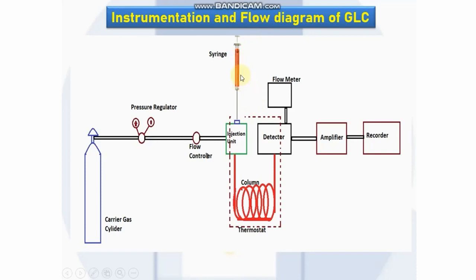Gaseous samples may be introduced by a gas-tight hypodermic needle, while for liquid samples, syringes may be used. The column is the most integral part of the system where the basic chromatographic process takes place. It consists of coiled tubing made of heat-resistant materials like stainless steel, modified glass, and fused silica.